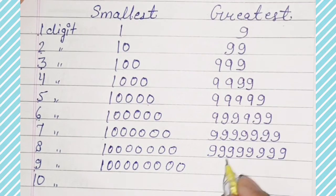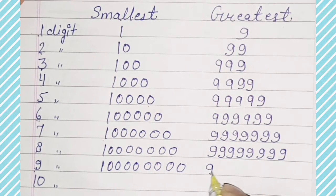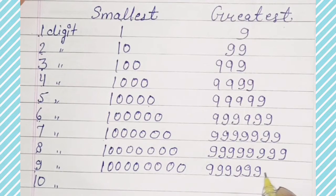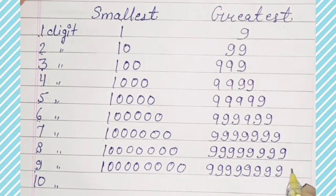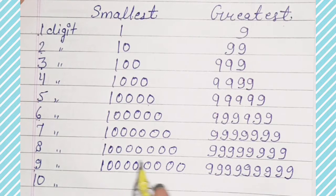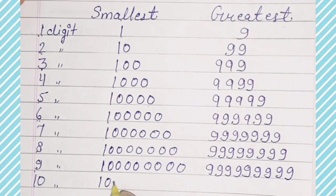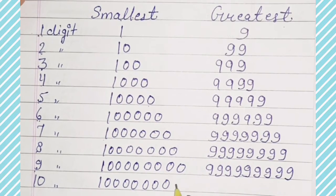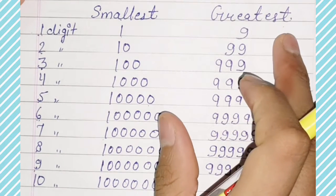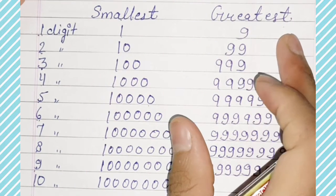9-digit greatest number is 999999999. 10-digit smallest number is 10000000000 and 10-digit greatest number is 9999999999.